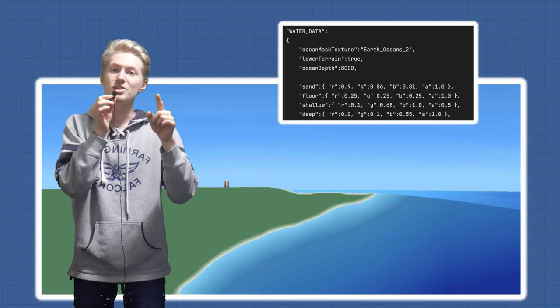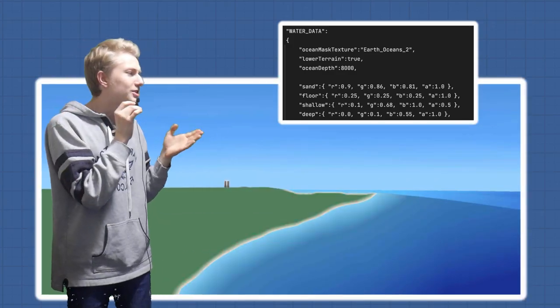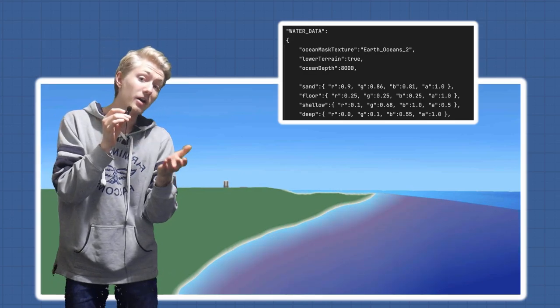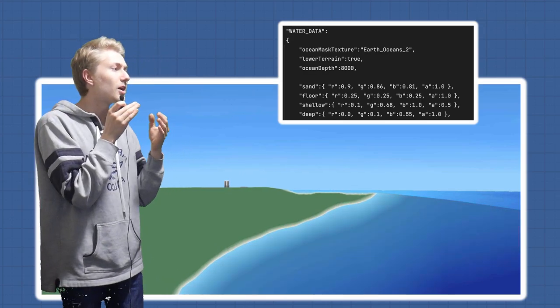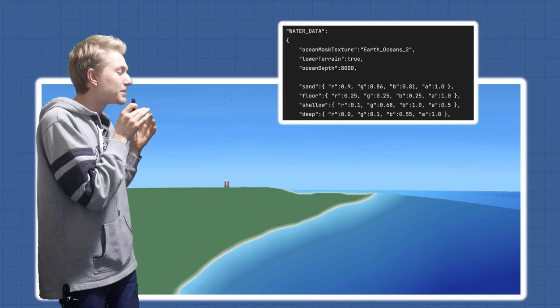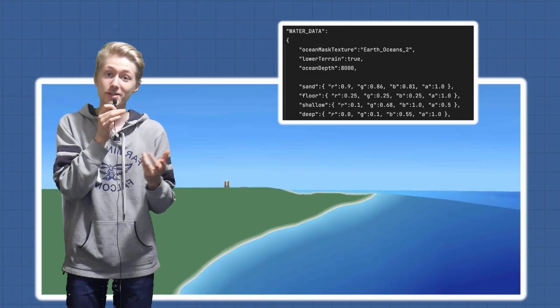Now the sand represents the areas of the beaches shown here, the floor represents the bottom of the terrain underneath the water, and the shallow and deep parts are kind of self-explanatory. They represent the shallow parts of the ocean and the deep parts of the ocean.